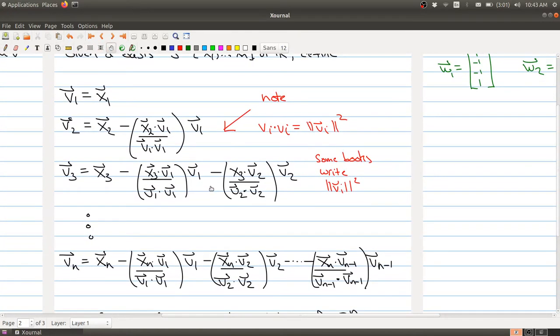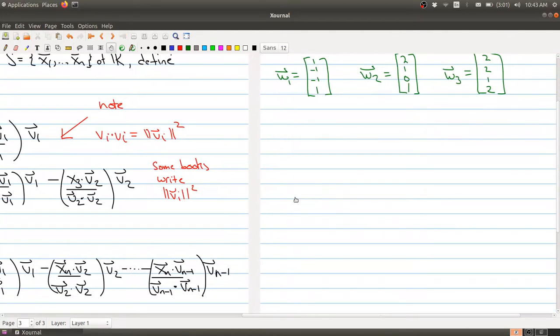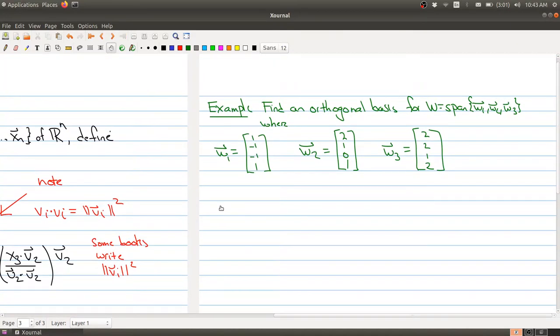So here is the Gram-Schmidt process, and over here I have the example that I want to spend a little bit of time on. We want to find an orthogonal basis for the space spanned by w1, w2, w3, where w1, w2, w3 are given by these vectors here. And in fact, this is a basis, so they are linearly independent as well.